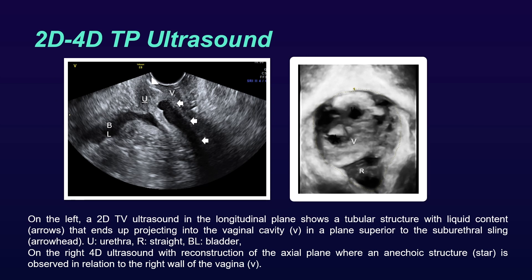On the picture on the left, we can see a 2D Transvaginal Ultrasound in the longitudinal plane showing a tubular structure with liquid content, marked with arrows, that ends up projecting into the vaginal cavity in a plane superior to the suburethral sling, marked with an arrowhead. On the right, a 4D ultrasound with reconstruction of the axial plane where an anechoic structure marked with a star is observed in relation to the right wall of the vagina.